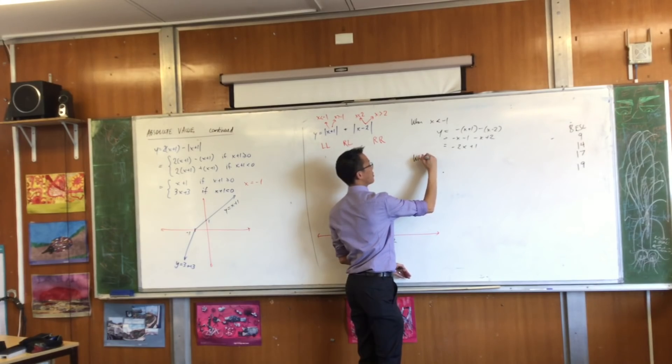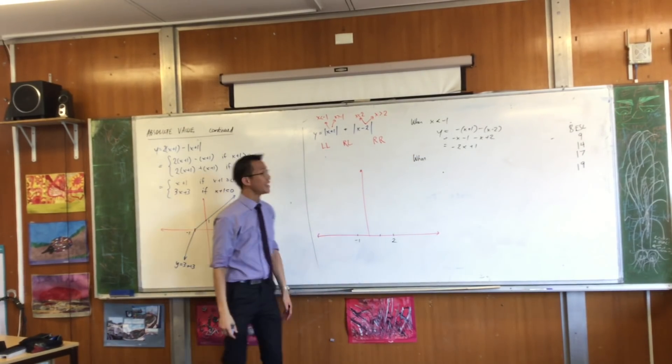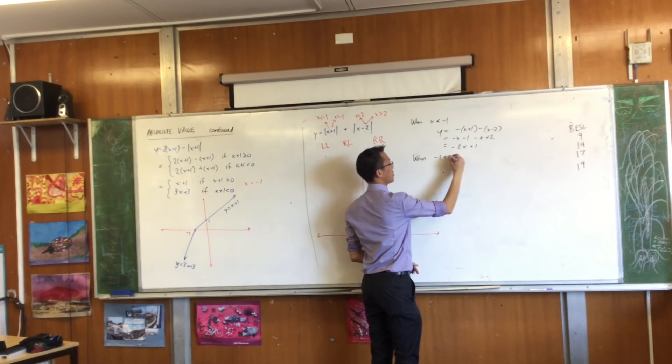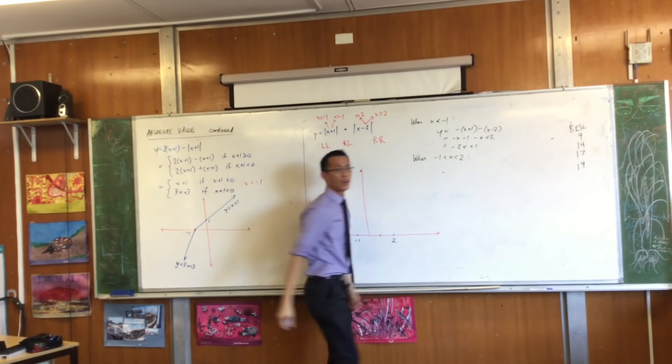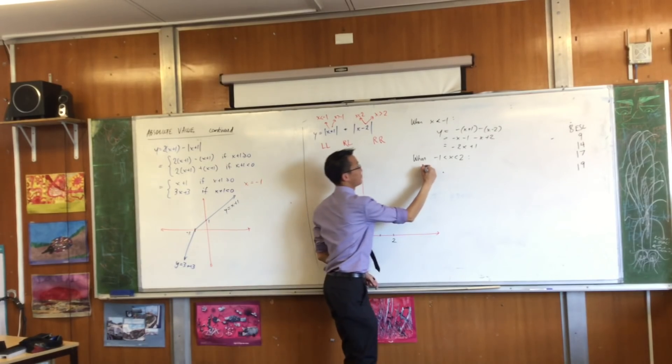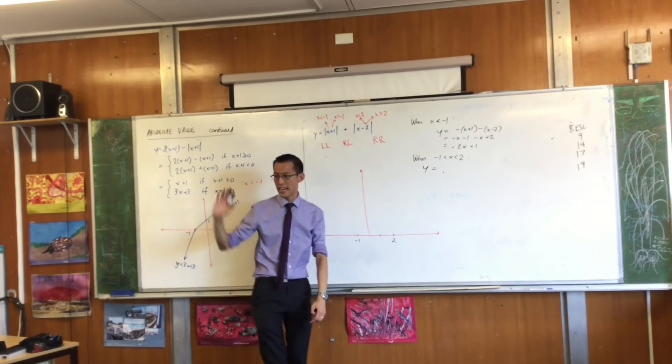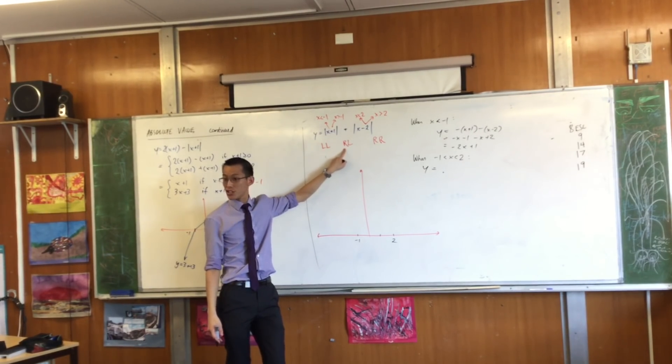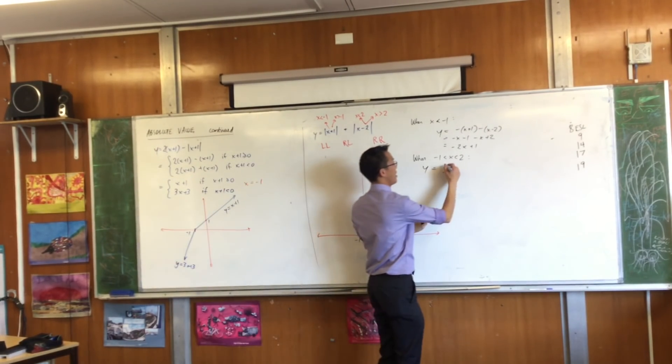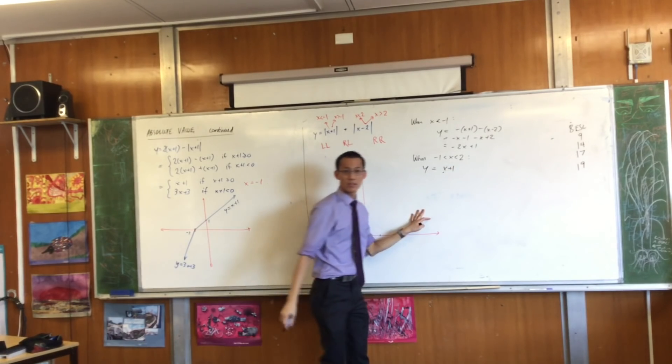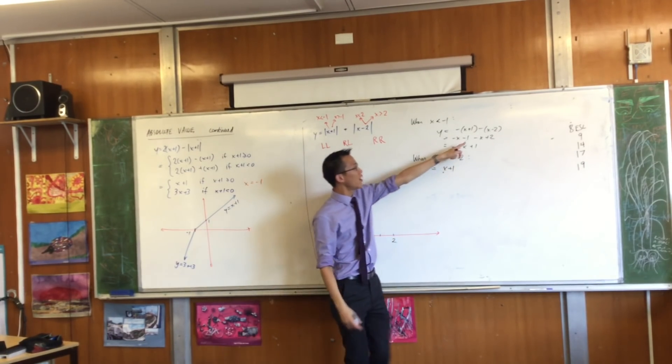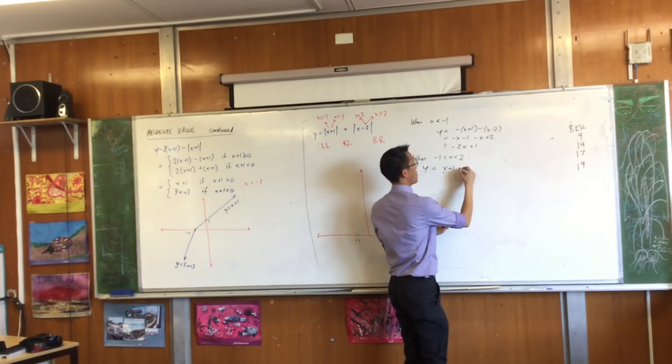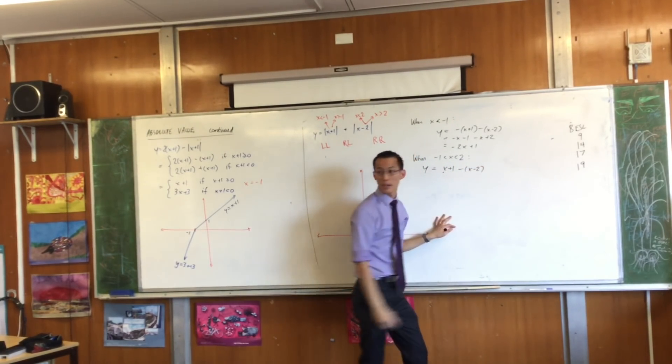All right, what about in between negative 1 and 2? What's going to happen? Do I have the negative version of this, or the positive version? Ooh, he switched over. Did you notice that? So I can write just regular old x plus 1. But I've still got the negative version of this, don't I? He hasn't switched over yet. So I'm going to write minus x minus 2.